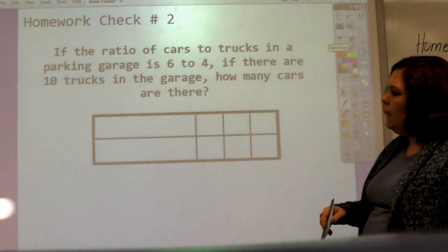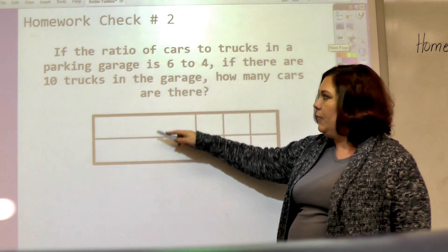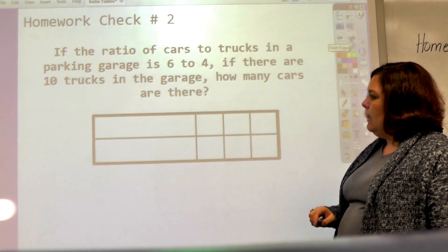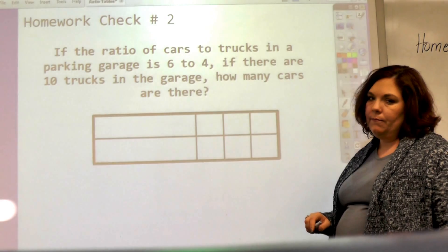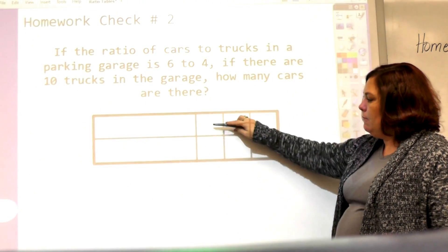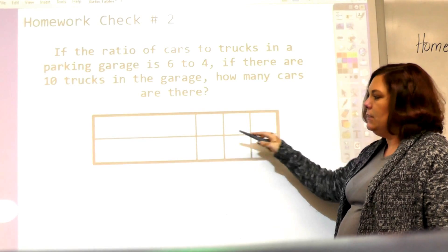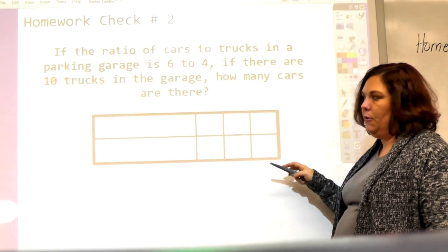Next is a ratio table. If the ratio of cars to trucks, go ahead and label that, in a parking garage is 6 to 4, if there are 10 trucks in the garage, how many cars are there? You need to label it, put in the information you have, put in the information you want, and you're going to simplify before you multiply.